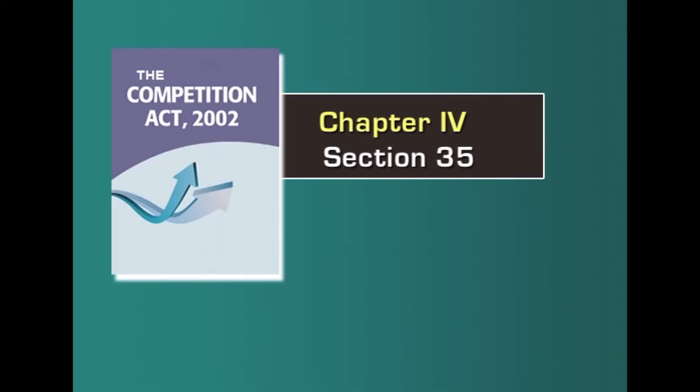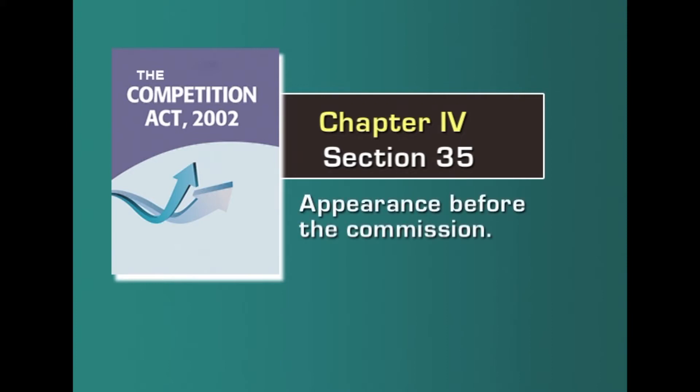The other important section we are going to discuss is section 35, which talks about appearance before the commission. Section 35 basically addresses the discussion of who are the people who can appear before the commission. Most often traditionally, it is the lawyers or legal practitioners who always appear before any judiciary or quasi-judicial authority or a tribunal. Section 35 sets out who are the persons who can actually appear before the commission.